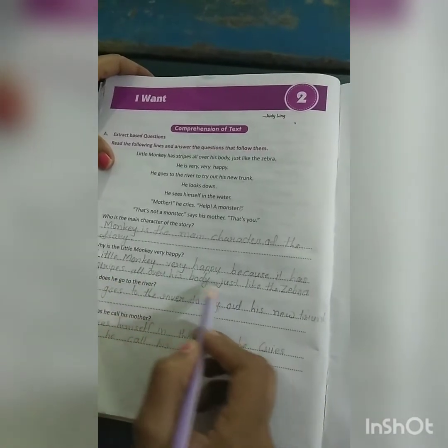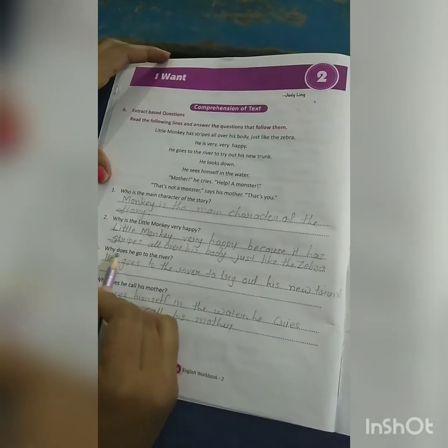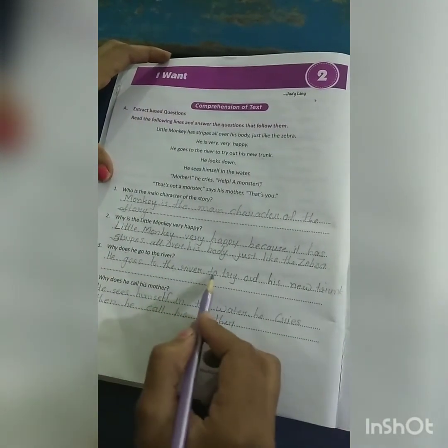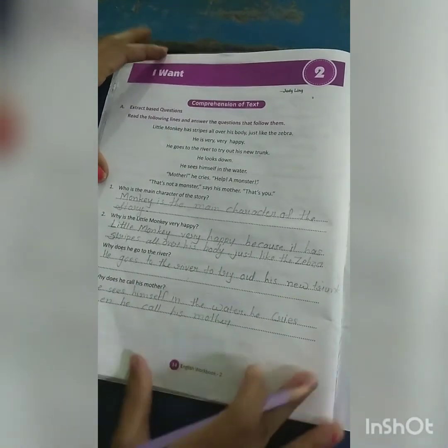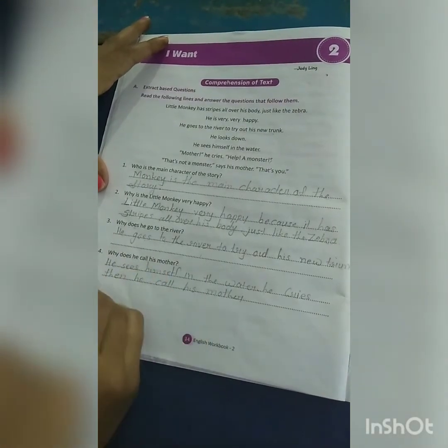Question number 3: Why does he go to the river? He goes to the river to try out his new trunk. Question number 4: Why does he call his mother? Answer: He sees himself in the water, he cries, then he calls his mother.